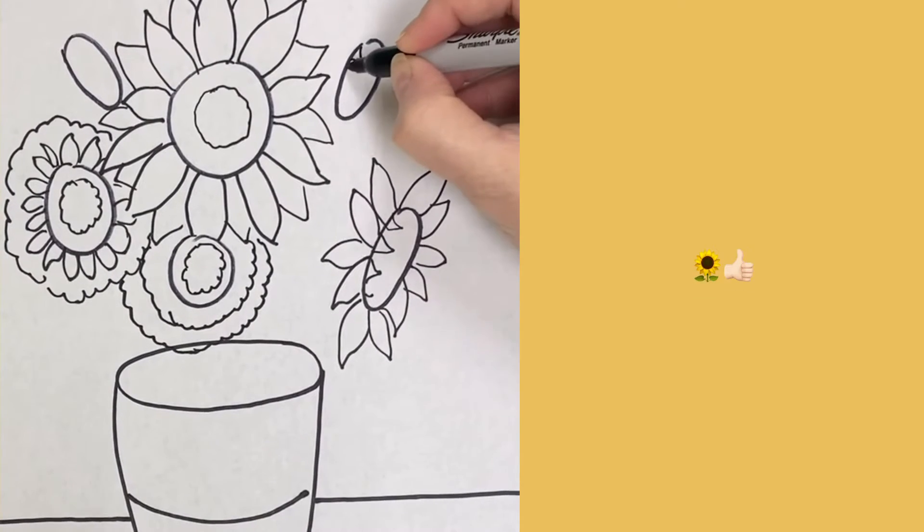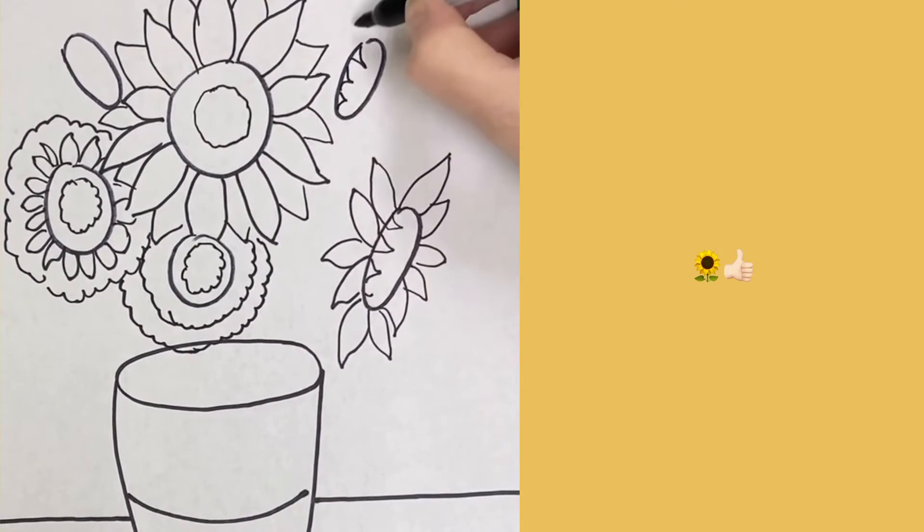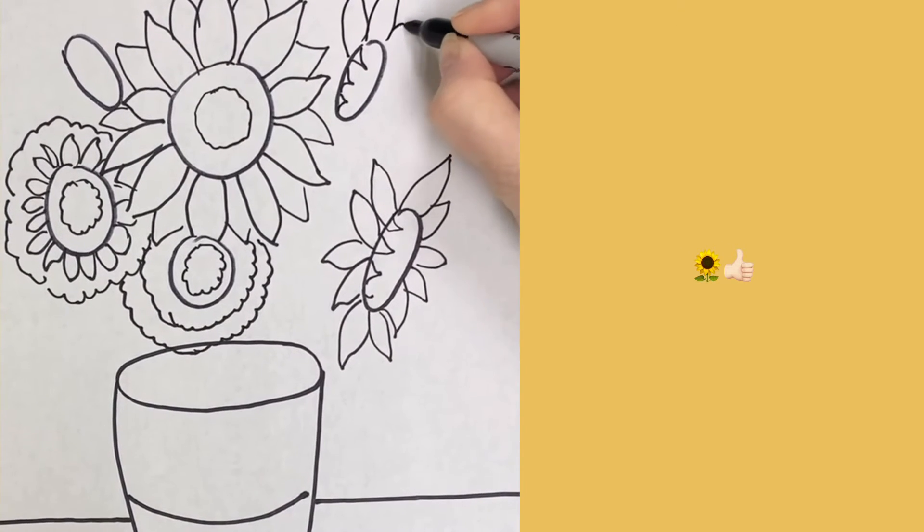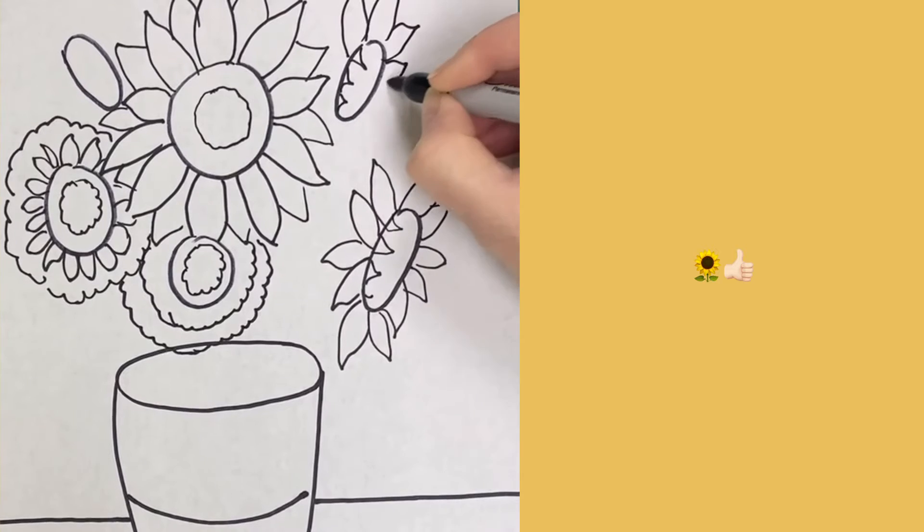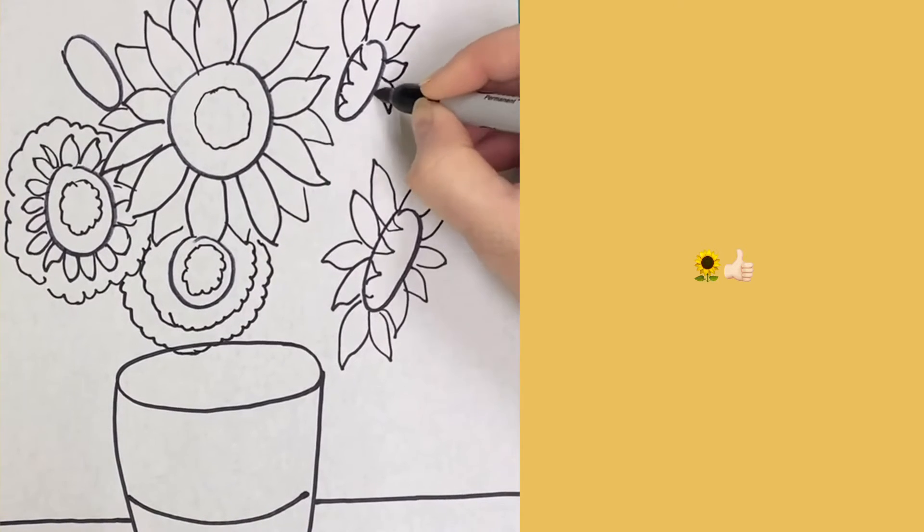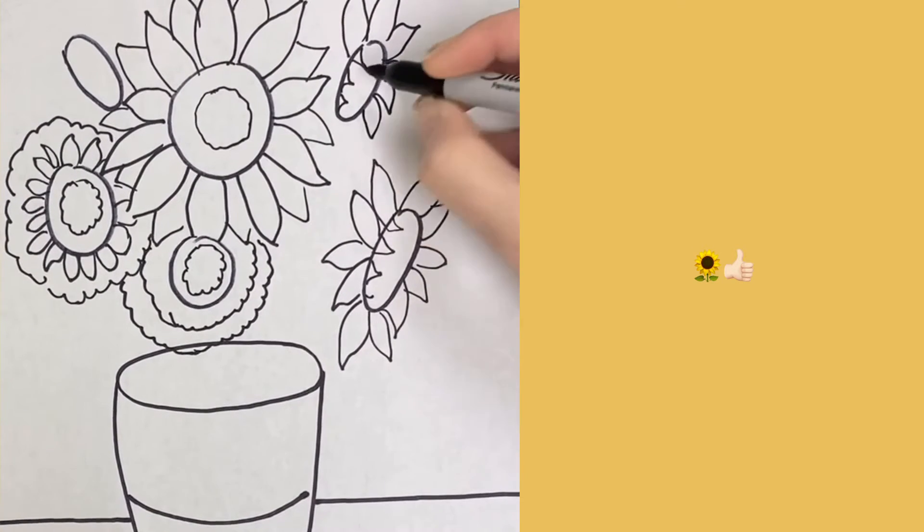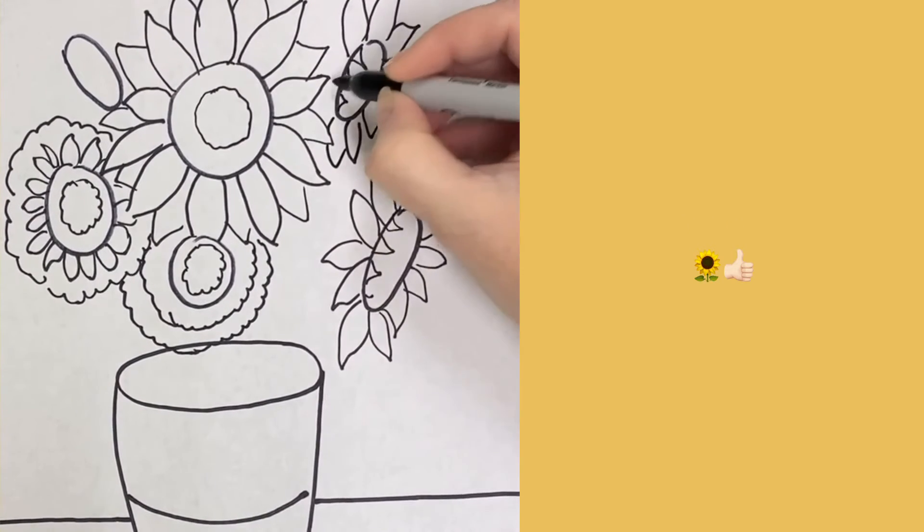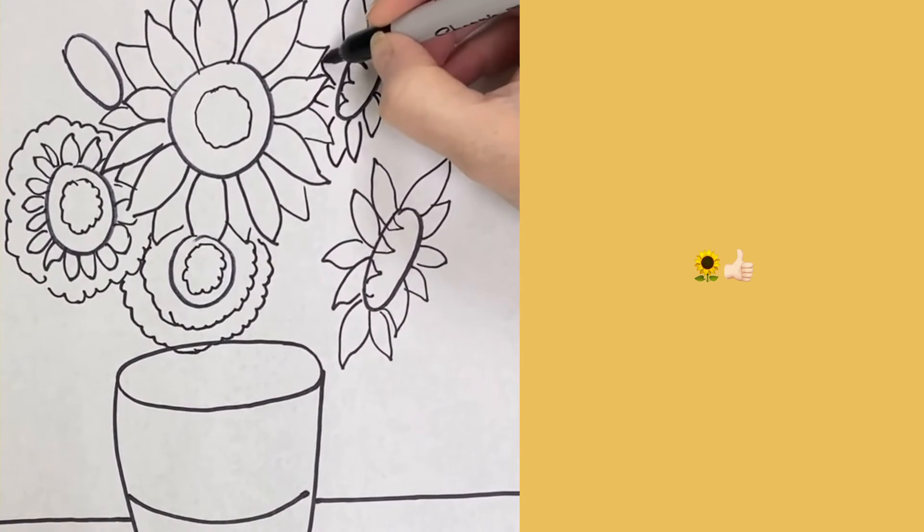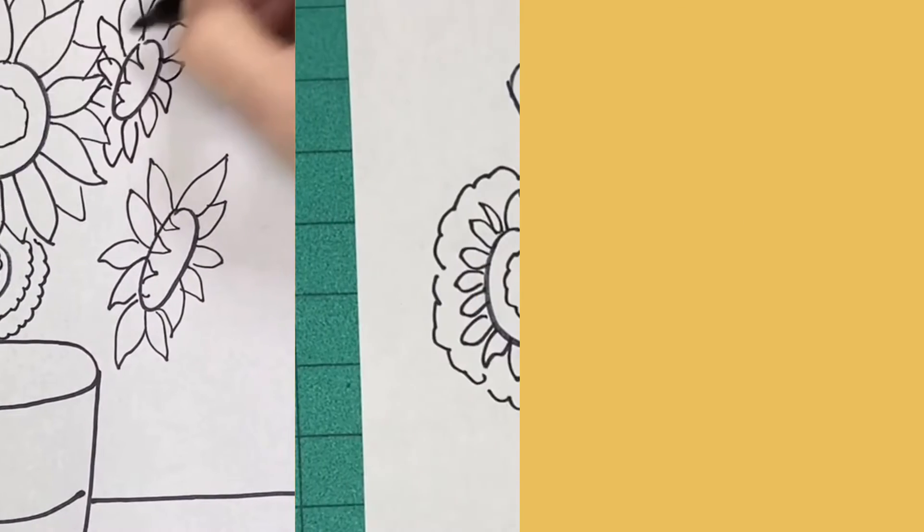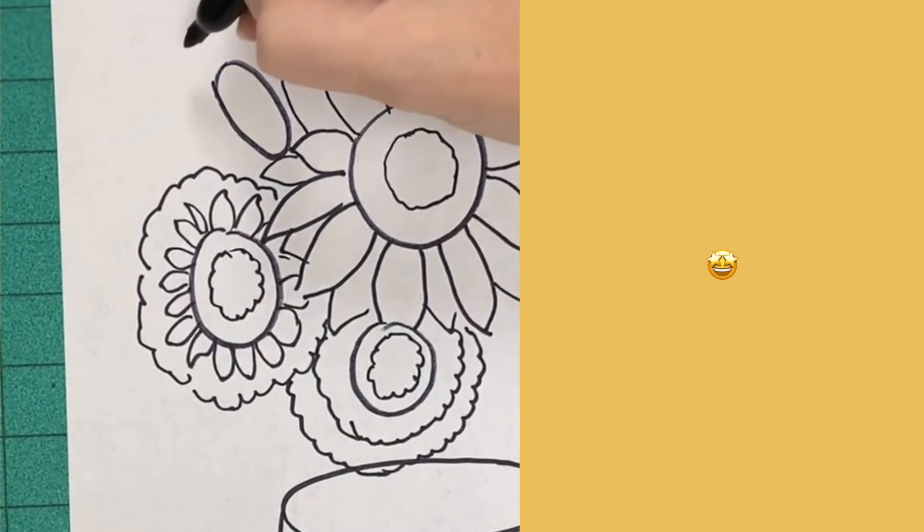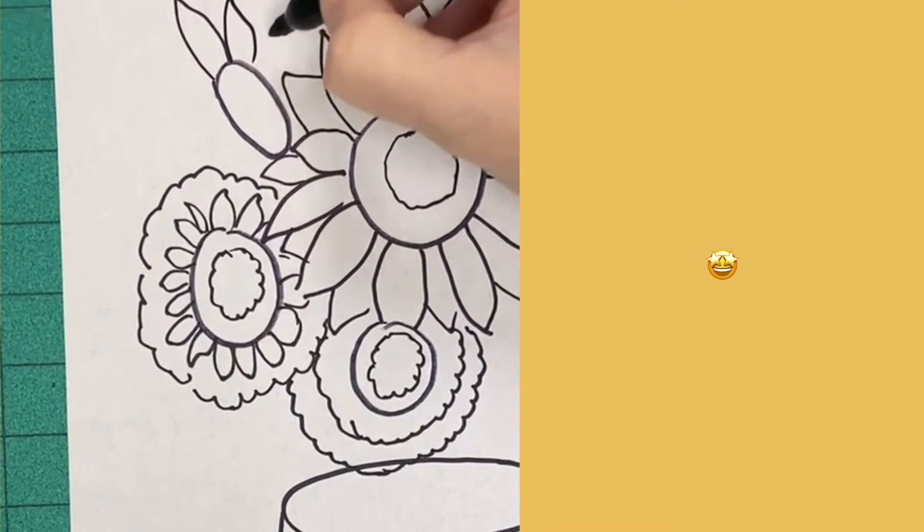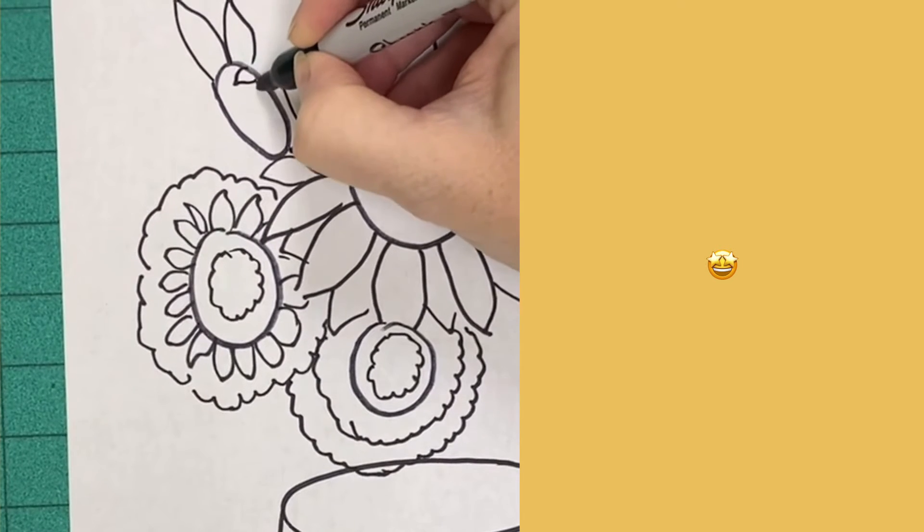Here's another sideways one so this sideways one on the left side of my painting is very much overlapped by that big middle sunflower.